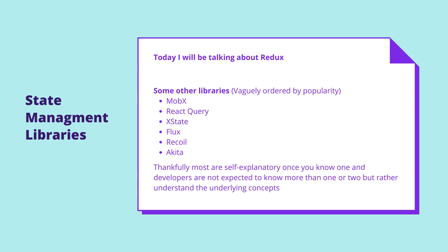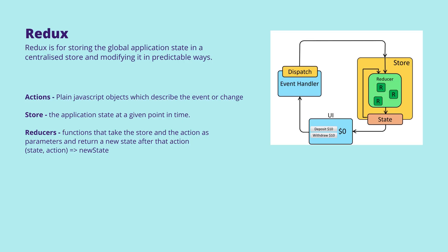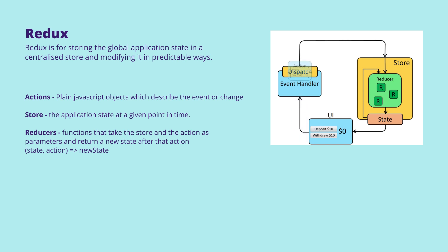Today I'll be talking about Redux, but there are many public state management libraries, and unfortunately even more custom-made internal ones. Thankfully, most are self-explanatory once you know one, and developers are not expected to know more than one or two, but rather understand the underlying concepts that can generally be applied. So what is Redux? At its core, Redux is for storing the global application state in a centralized store and modifying it in predictable ways. It leans heavily on the functional programming paradigm, such as immutability, and has three fundamental aspects: the store, reducers, and actions.